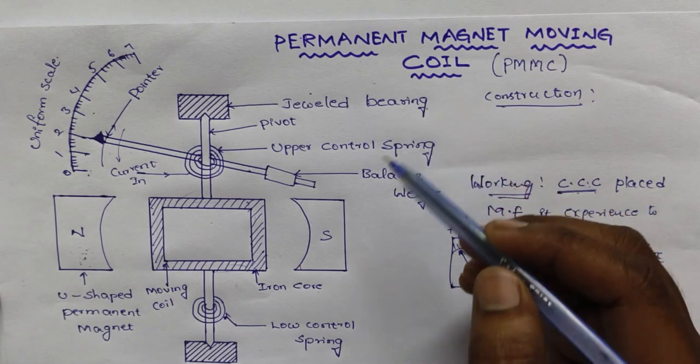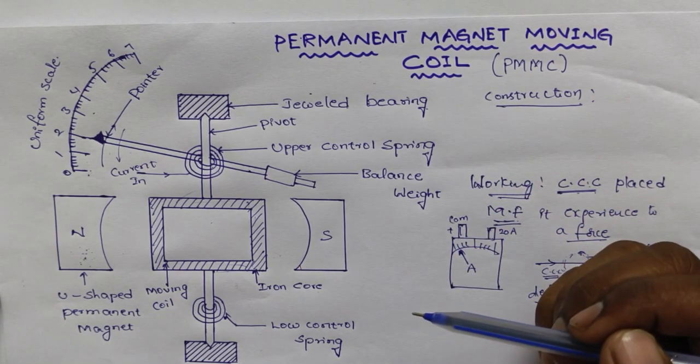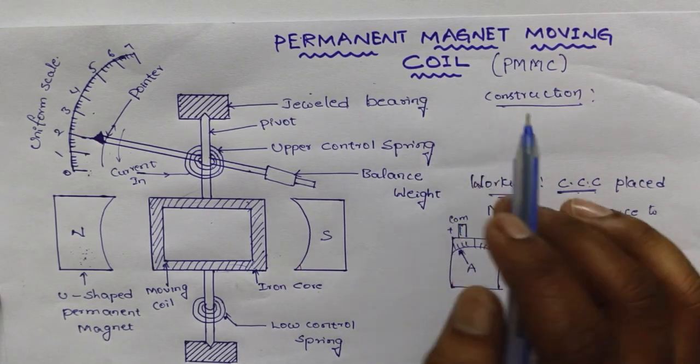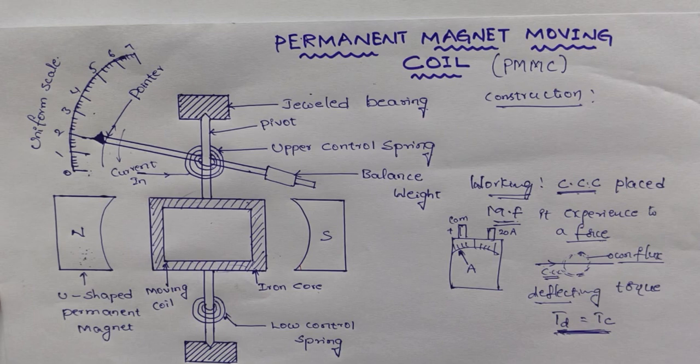And one of the disadvantages of this permanent magnet moving coil is it is only for DC supply not for the AC supply. So, hope you understand. Thank you.